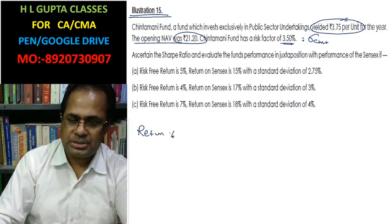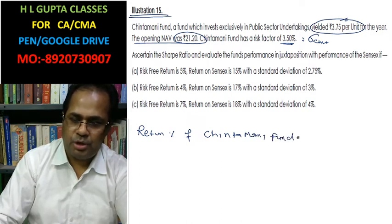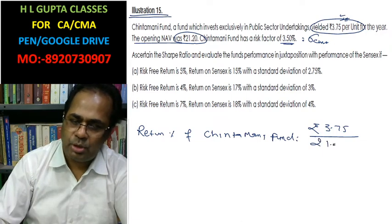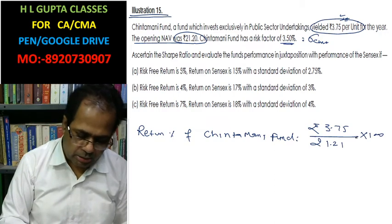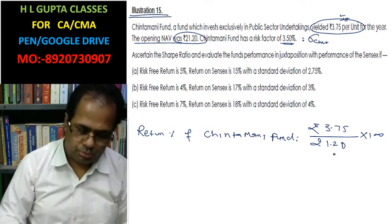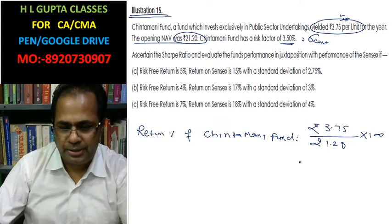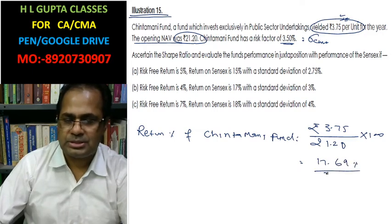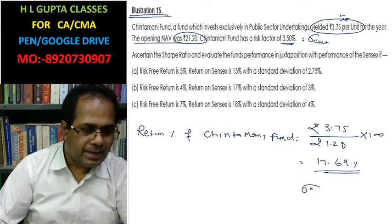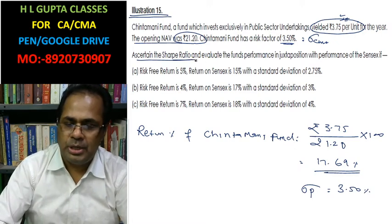What is the return percentage of Chintamani Fund? The return is rupees 3.75 out of an investment of 21.20. So: 3.75 divided by 21.20, multiplied by 100, equals 17.69 percent. The standard deviation of this return — that is, the standard deviation of the portfolio — is 3.50 percent. Now we need to ascertain the Sharpe ratio and evaluate the fund performance.